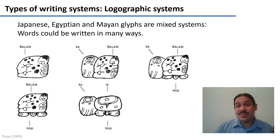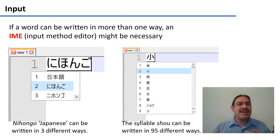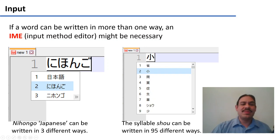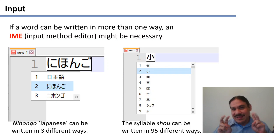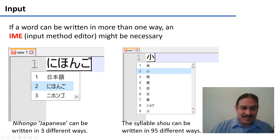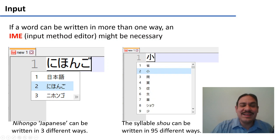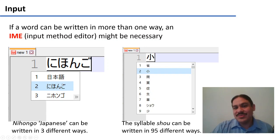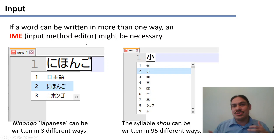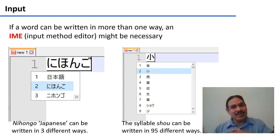The same thing happened in Egyptian hieroglyphs — there are many alternative ways to write a word. And the same thing happens in modern Japanese. For example, the word for 'Japanese language,' nihongo, can be written in the Latin transcription n-i-h-o-n-g-o on the keyboard, and your screen will display three options: the one with Chinese characters, the one with the hiragana syllabary, and the one in the katakana syllabary. You need to manually select which one, because all three are perfectly valid ways to write the same word.